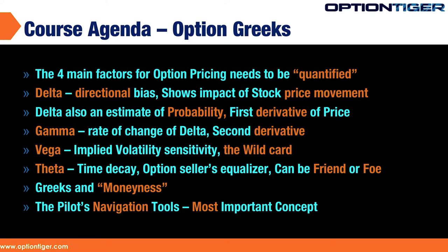There are four main Greeks representing the four major factors that affect option pricing. They are Delta, Gamma, Vega, and Theta. We'll also look at the Greeks in the context of the moneyness of an option.